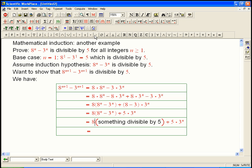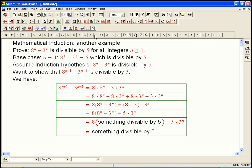So both terms are divisible by 5. And so the whole thing is going to be something divisible by 5. Because when I add two things that are divisible by 5, the result is going to be divisible by 5.